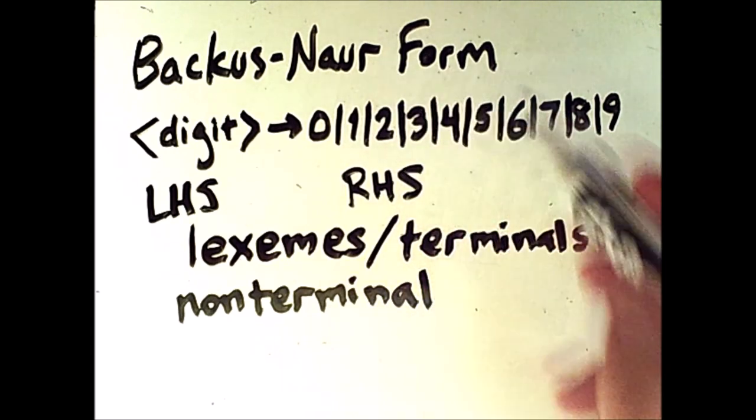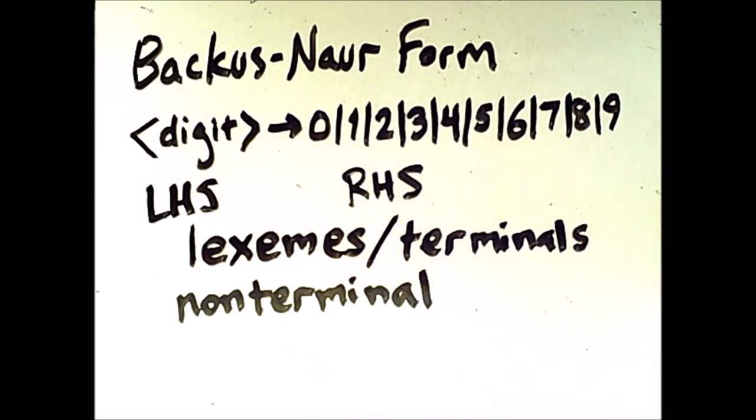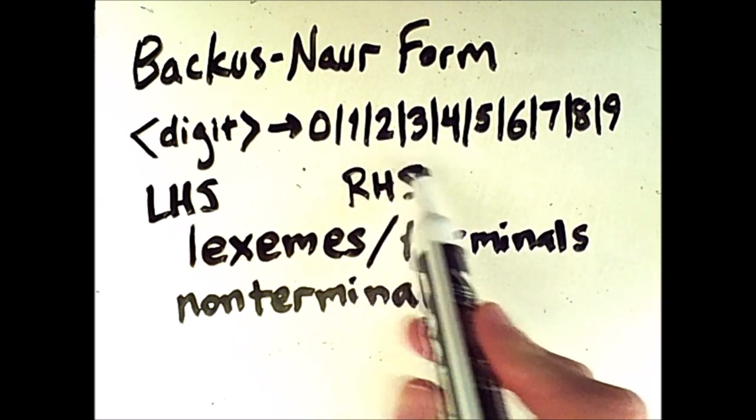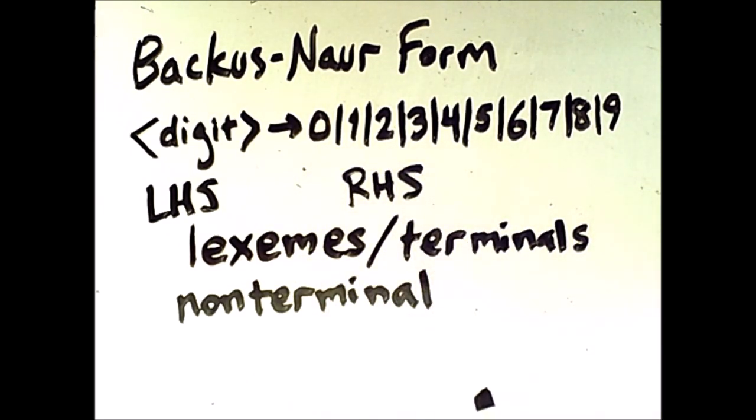These vertical bars represent OR. So what this rule says is that the entity named digit can transform into a 0, or a 1, or a 2, or so on, basically any of the digits. Terminals are aspects of the grammar that cannot be simplified any further. So this rule defines a single digit.